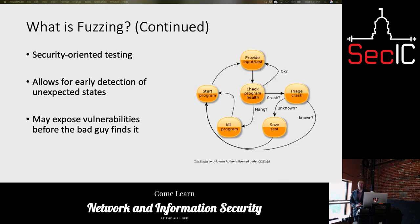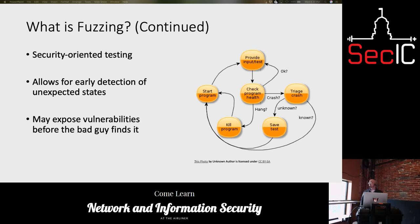Fuzzing is now primarily recognized as security-oriented testing. The big benefit of fuzzing is that it allows for early detection of unexpected states within the software, and it may provide the developer the opportunity to expose the vulnerability before someone finds it in the wild and can exploit it.